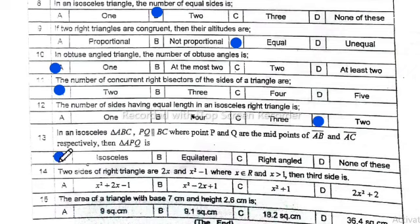Number 14: Two sides of a right triangle are 2x and x² - 1, where x belongs to real numbers and x > 0. Then the third side is x² + 1. Option C is correct. Number 15: The area of a triangle with base 7 cm and height 2.6 cm is 9.1 square centimeters. Option B is correct.